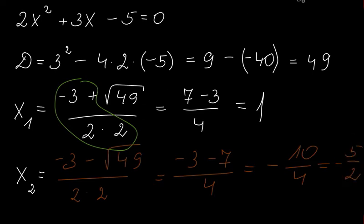So these two are our solutions: x₁ = 1 and x₂ = negative 5 over 2.